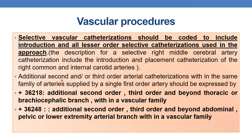Additional second or third order arterial catheterization within the same family of arteries supplied by a single first order artery should be expressed by add-on codes: +36218, which is additional second order, third order and beyond thoracic or brachiocephalic branch within a vascular family; and +36248, which is additional second order, third order and beyond abdominal, pelvic, or lower extremity arterial branch within a vascular family.